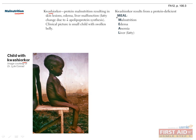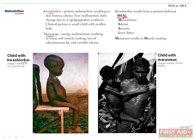You can use the mnemonic MEAL to remember the signs and symptoms of Kwashiorkor. Marasmus, on the other hand, is an energy malnutrition in which there is insufficient overall caloric intake. These patients present with tissue and muscle wasting, loss of subcutaneous fat, and variable edema. It's important to remember that unlike Marasmus, Kwashiorkor can occur in patients with a normal caloric intake, as long as they have a very small amount of calories from protein.